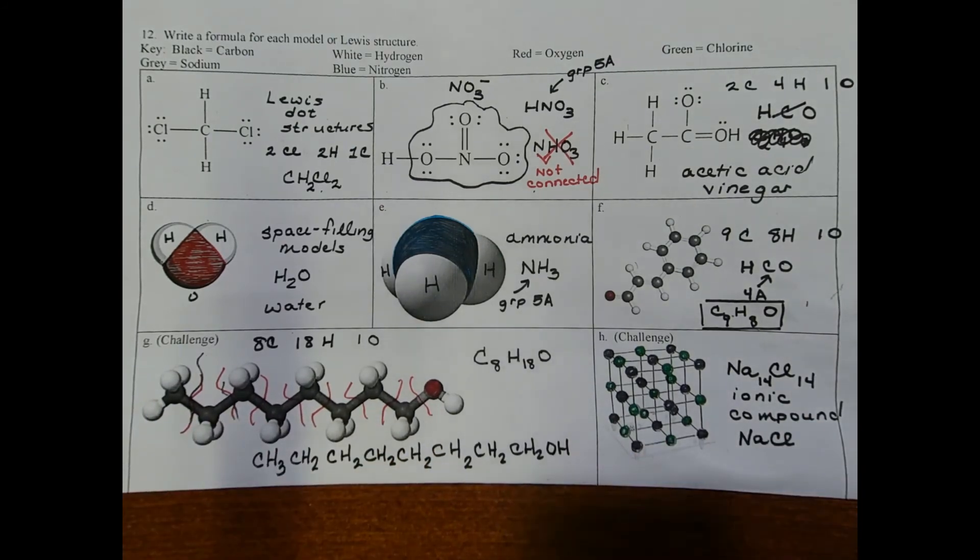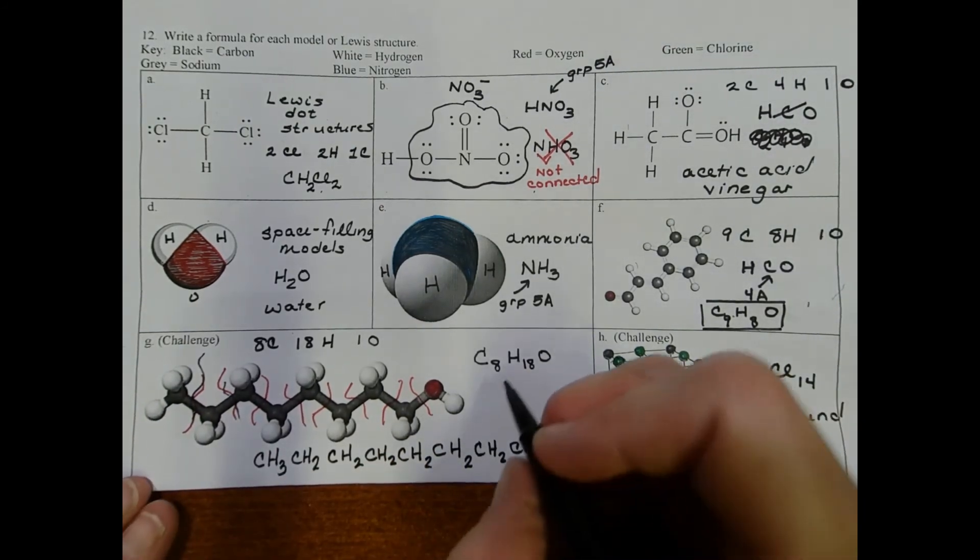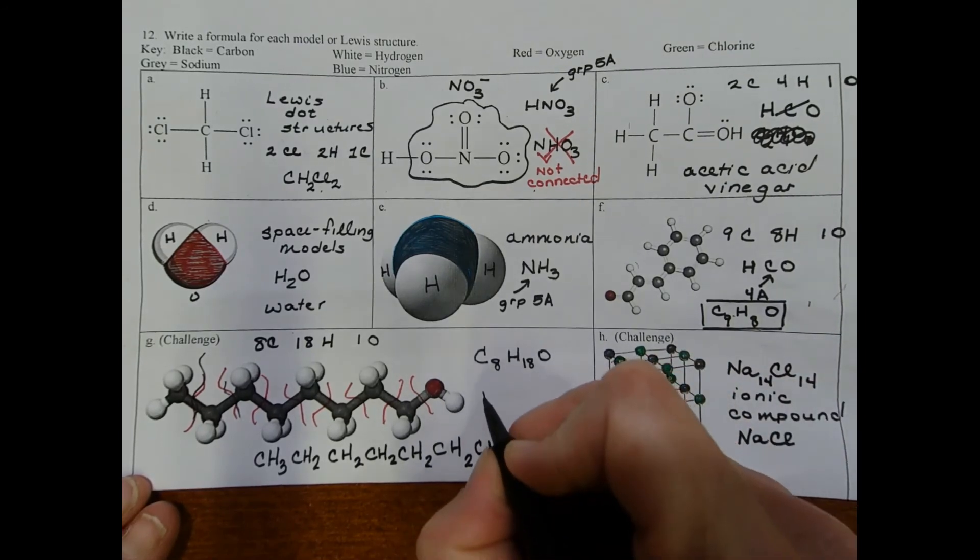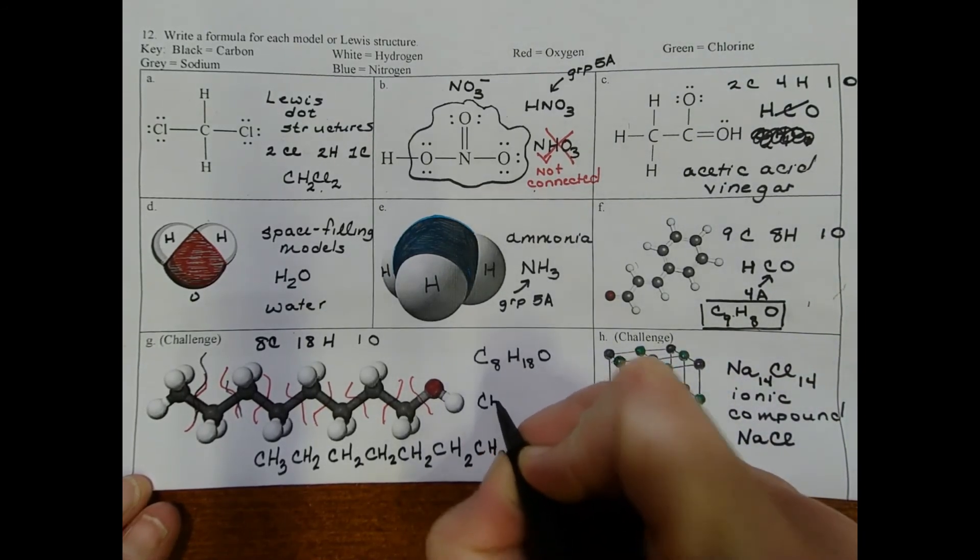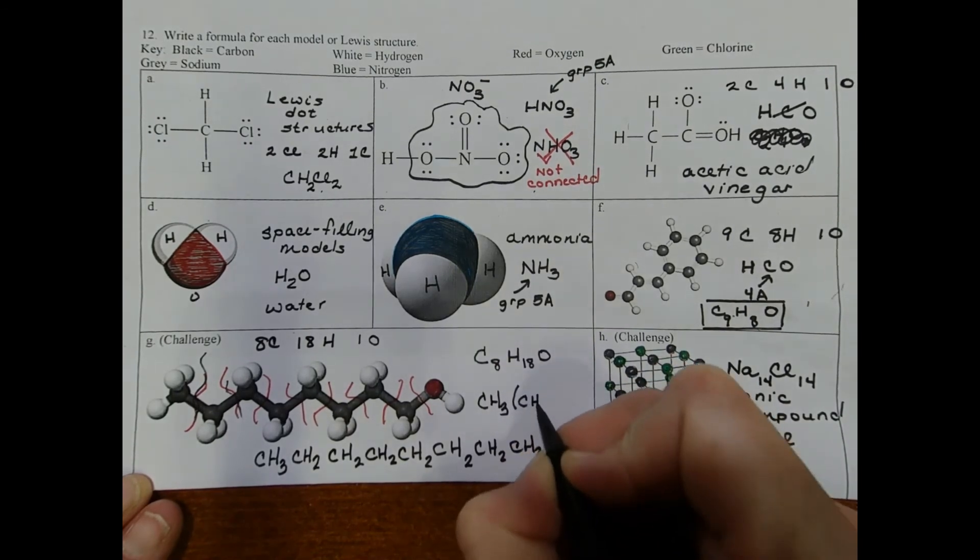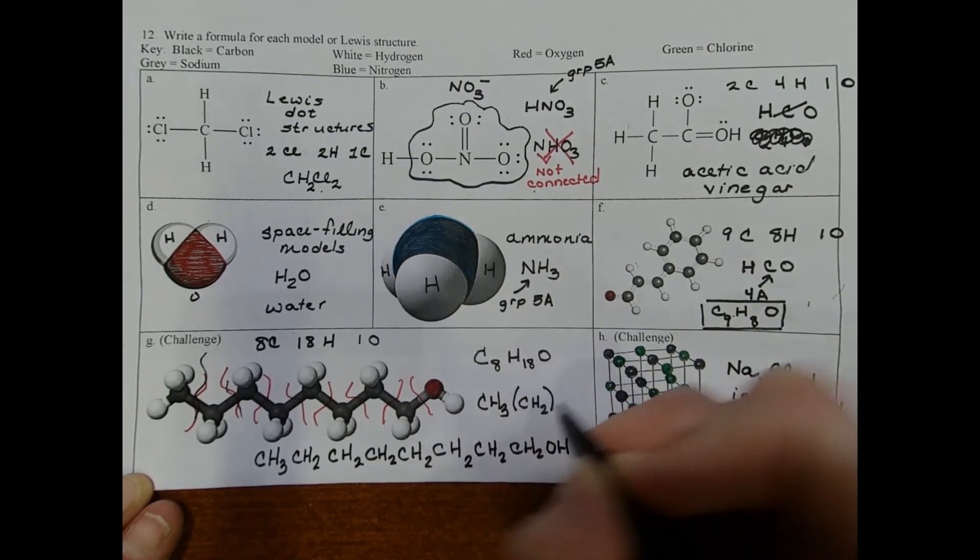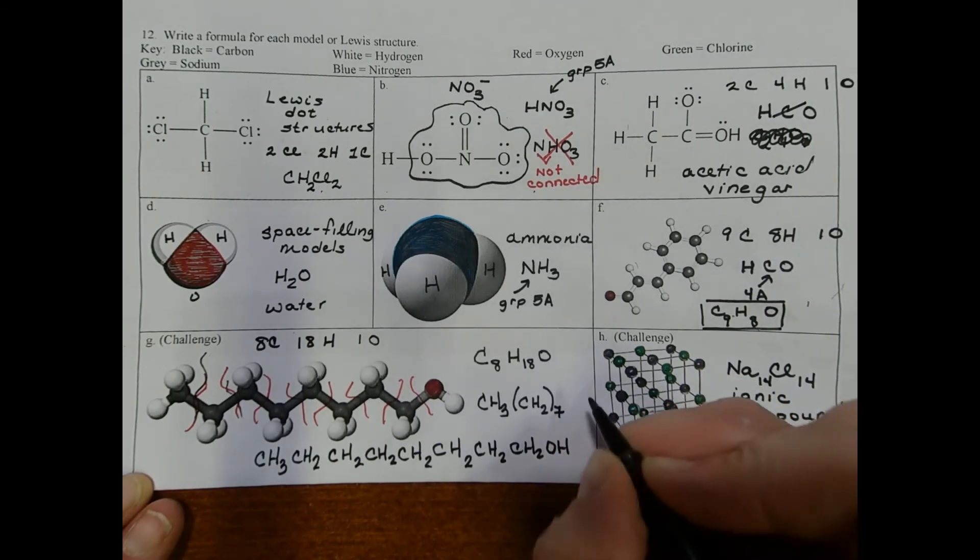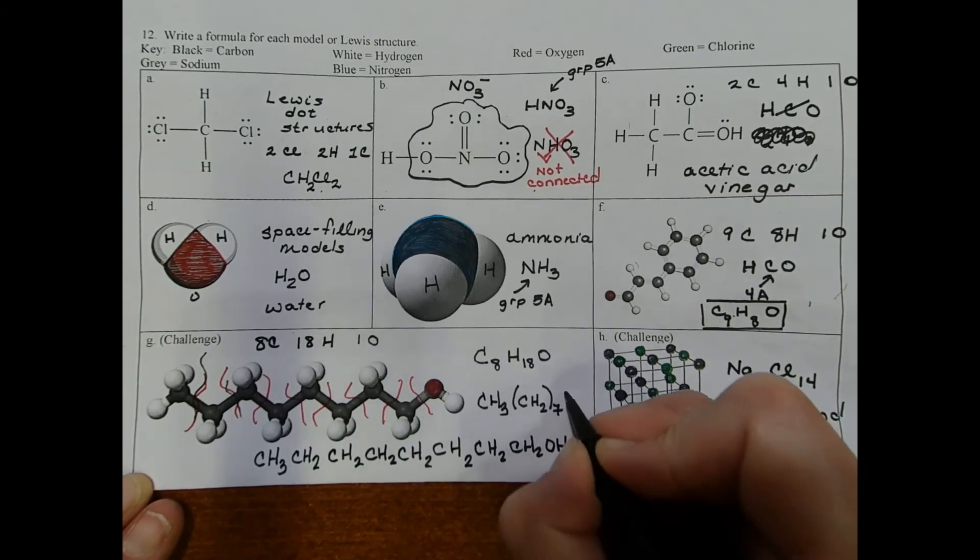That seems like a lot of work and it's super repetitive. So your last option, and any of these options are correct, would be to say CH3, CH2. Put that in parentheses. And then you can put a subscript of 7 since it comes out 7 times. And then OH.